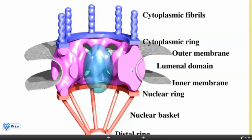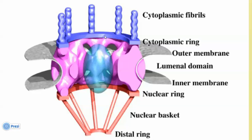Looking at the nuclear pores from the slides, we have three rings: the cytoplasmic ring, the nucleoplasmic ring (near the nucleoplasm), and the middle ring. The cytoplasmic ring is named because it's near the cytoplasm. The nucleoplasmic ring has a function related to sending RNA out of the nucleus.